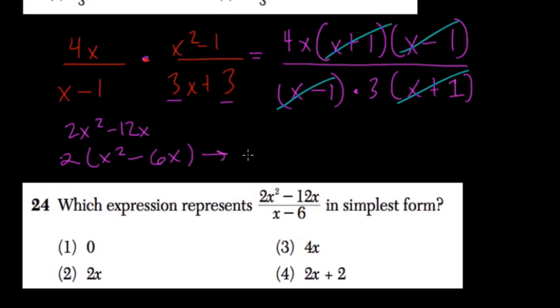There's still an x in common, so pull that out. So we have 2x, right, times x minus 6. So this is the expression for the numerator.